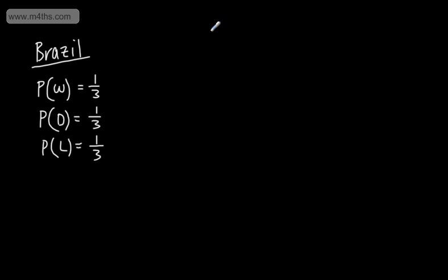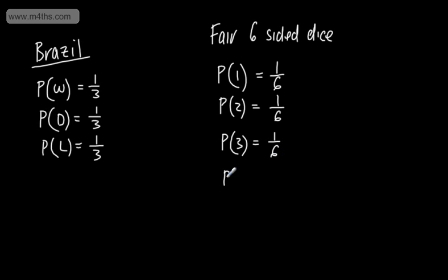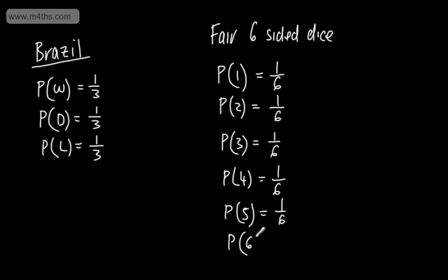Let's look at an example of experimental probability. We're going to take a fair 6-sided dice. Theoretically, the probability of rolling a 1 will be equal to 1 over 6, and all of these are equally likely outcomes. The probability of 2 is 1 over 6, the probability of 3 is 1 over 6, the probability of 4 is 1 over 6, the probability of 5 is 1 over 6, and the probability of a 6 is 1 over 6. So this is the theoretical probability of each of these outcomes.